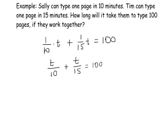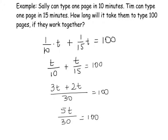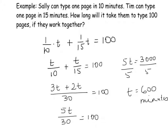Finding a common denominator gives 3t plus 2t over 30, which equals 100 pages. So 5t over 30 equals 100, meaning 5t equals 3000. Dividing by 5, t equals 600 minutes, or t equals 10 hours.